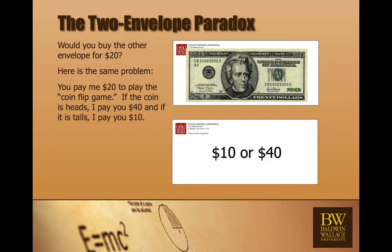So, here's a similar problem. You take twenty dollars out of your wallet and you play the coin flip game. If it's heads, I give you forty, so now you have a profit of twenty dollars. If it's tails, you still get money. I give you ten dollars. So, you either win forty or win ten and you're paying twenty dollars. This is a good deal for you.